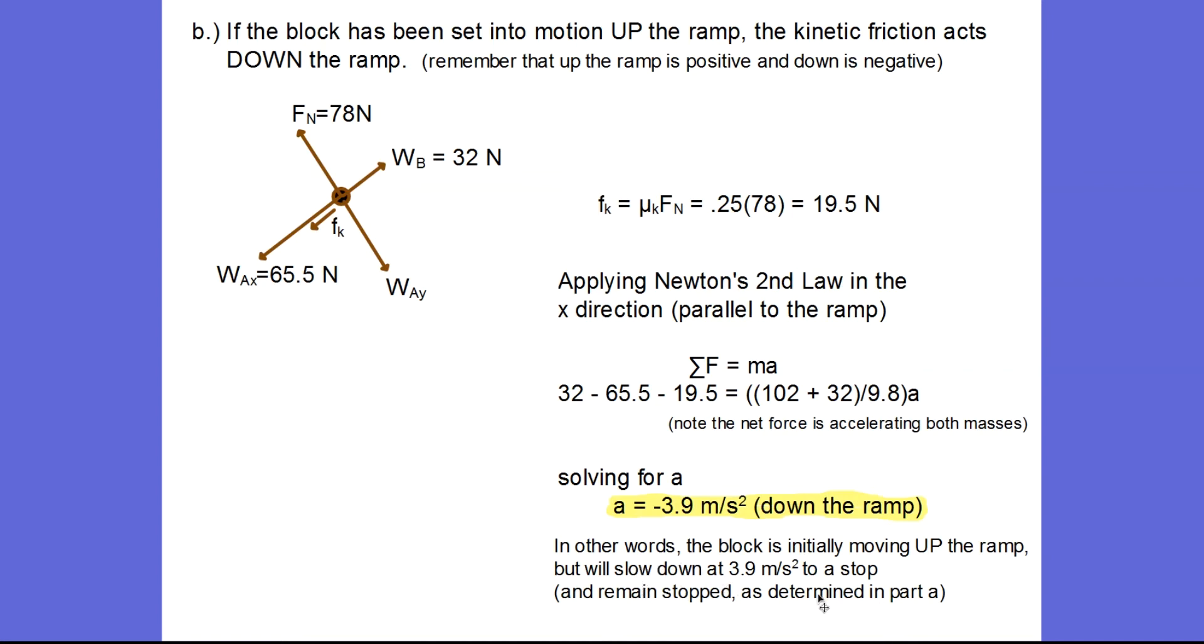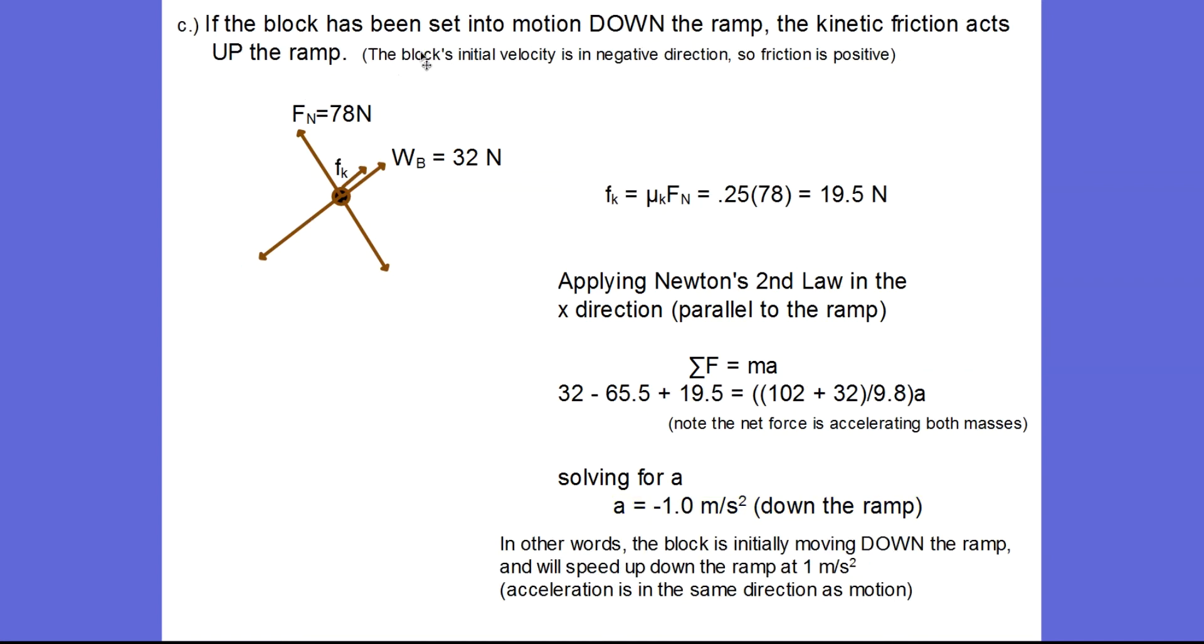In part c, they say the block has been set into motion down the ramp, so my frictional force is going to be up the ramp. Just like before in part b, the kinetic friction is 19 and a half newtons. Now my sum of the forces in the x direction includes a positive 19.5. I have two positive vectors in the positive x direction, and solving for a now gives me negative 1. The negative indicates down the ramp. Since the block is already moving down the ramp and it's accelerating down the ramp, that means it's going to speed up in the downward direction at 1 meter per second squared.